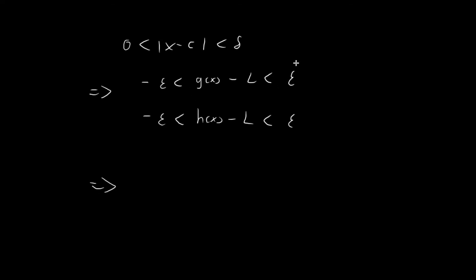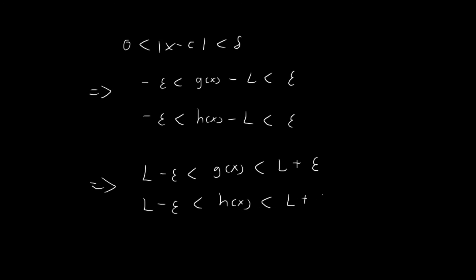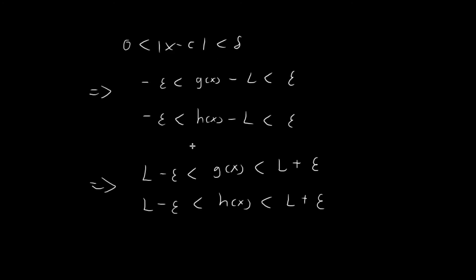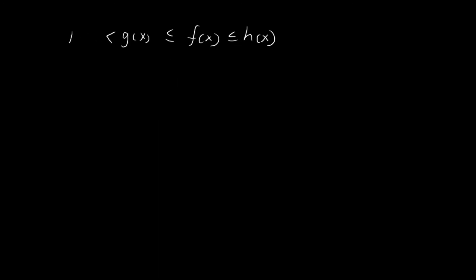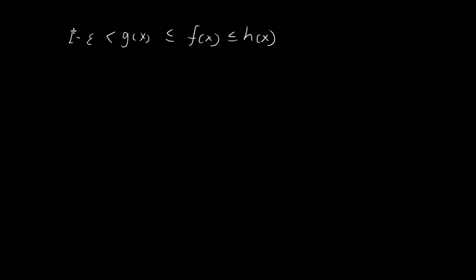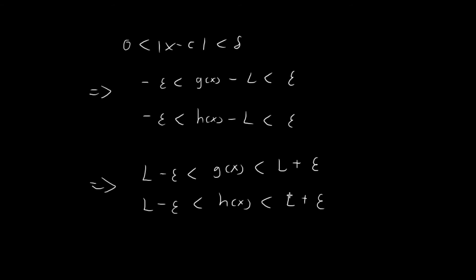Adding L to each term, it's implied that L − ε will always be smaller than g(x), which will always be smaller than L + ε. And the same goes for h of x: L − ε < h(x) < L + ε. We also know that f of x is always between g of x and h of x, and from here we know that g(x) is always larger than L − ε. So we can add this lower bound, and similarly impose the upper bound that h(x) must always be smaller than L + ε.